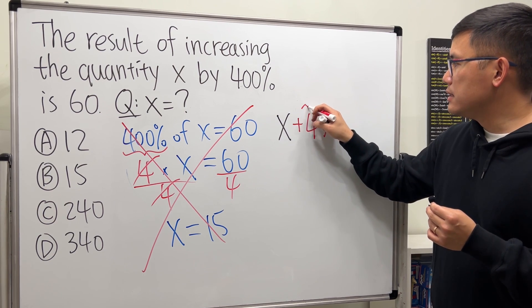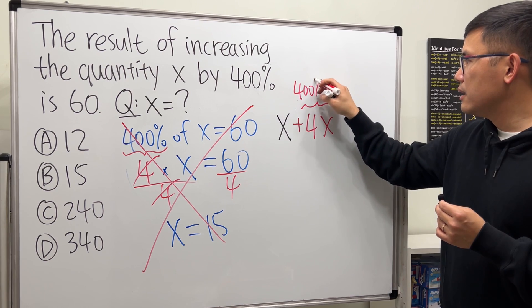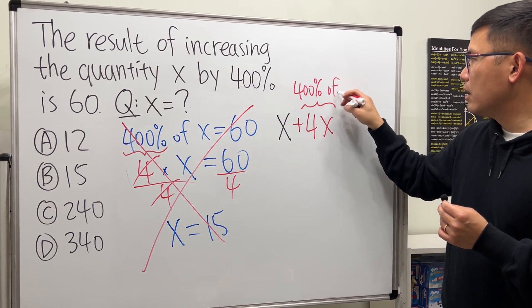Because this right here is precisely what we did - it's increased by 400 percent of x, so it's x plus 4x, and then you make the result 60.